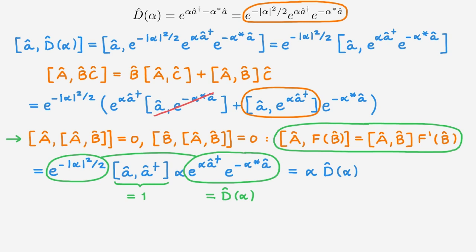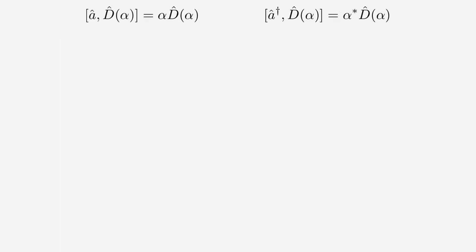Similarly, we can calculate the commutator of A† with the displacement operator, and the result is α* D(α). As a final property before we move on to the relation with coherent states, I want to consider the unitary transformation of the ladder operators. If you need a refresher about unitary transformations, you can find the corresponding video linked in the description.